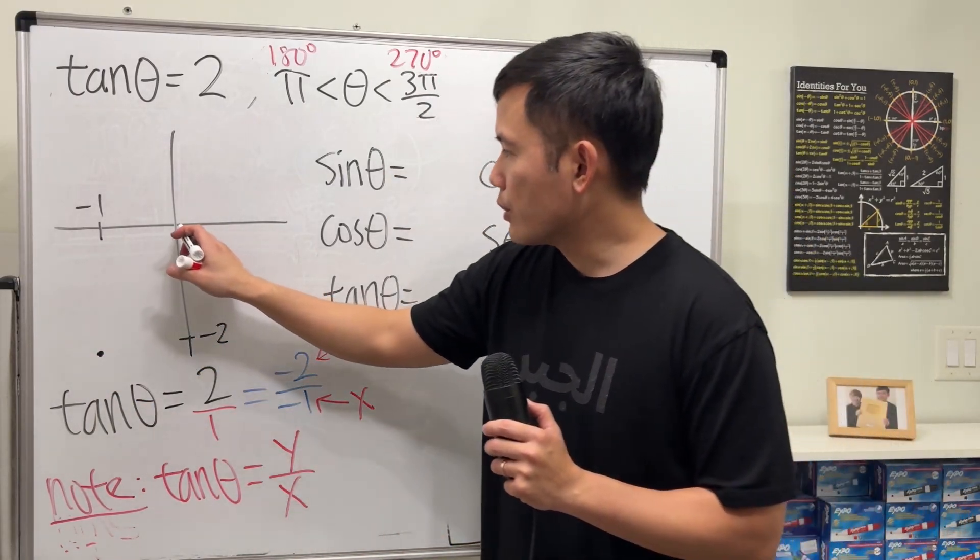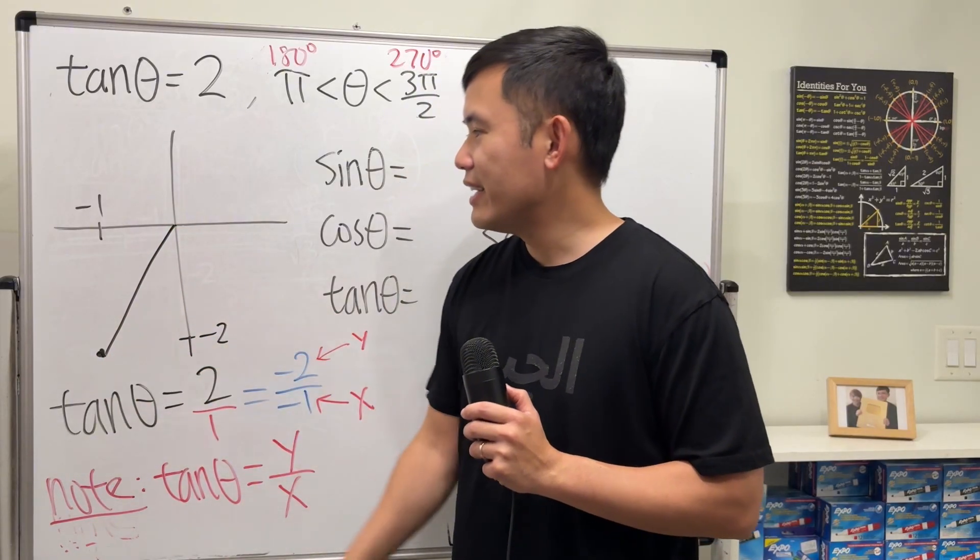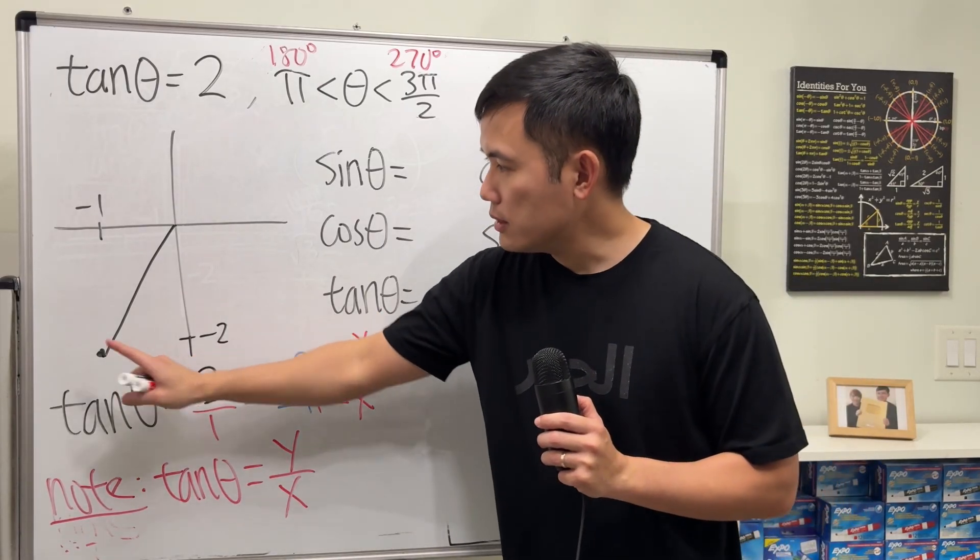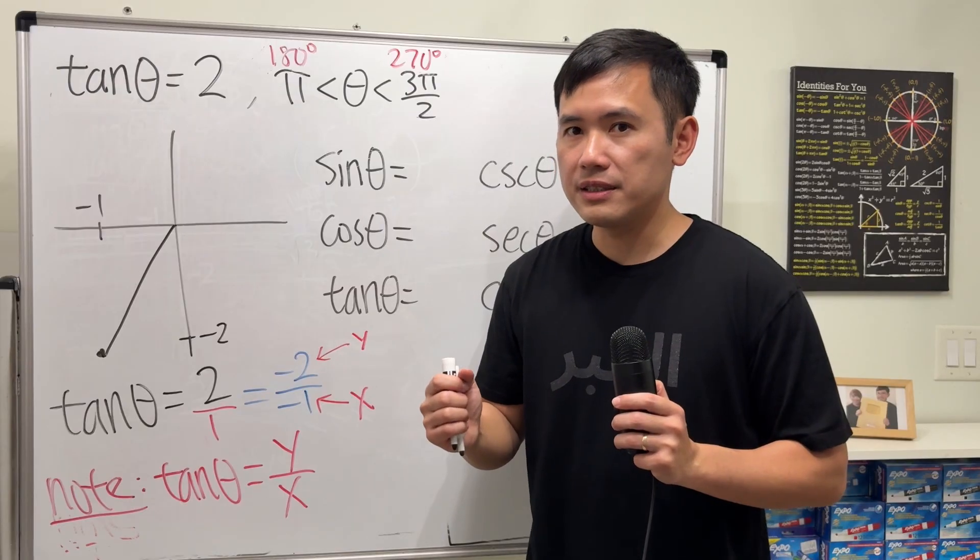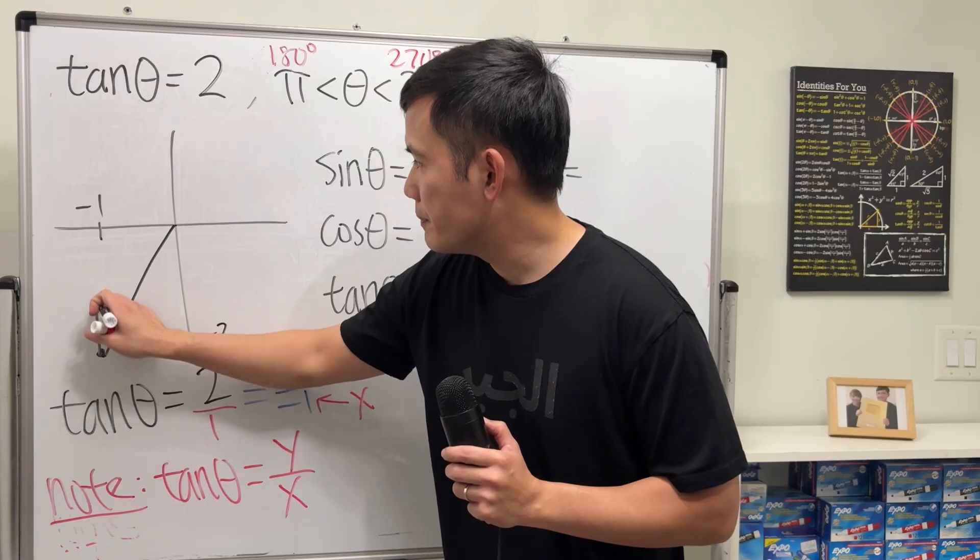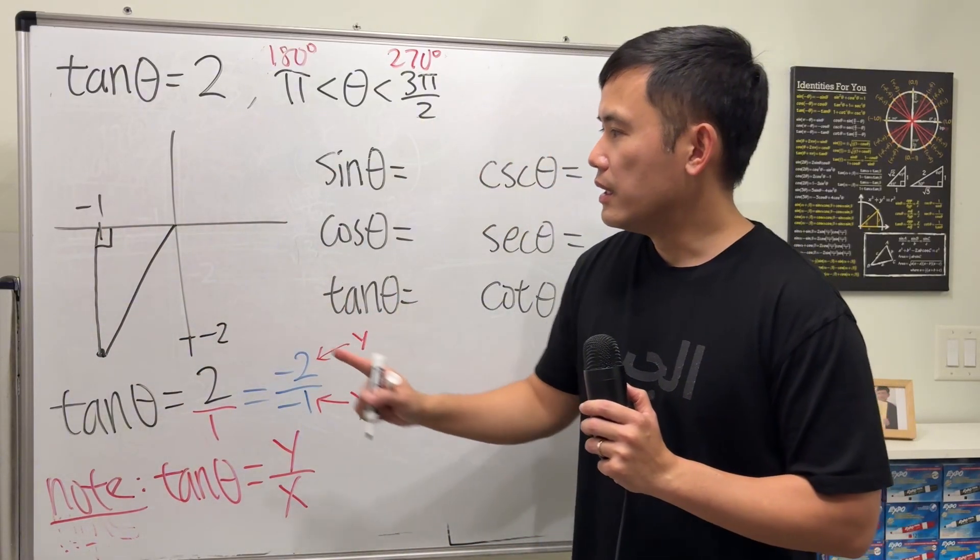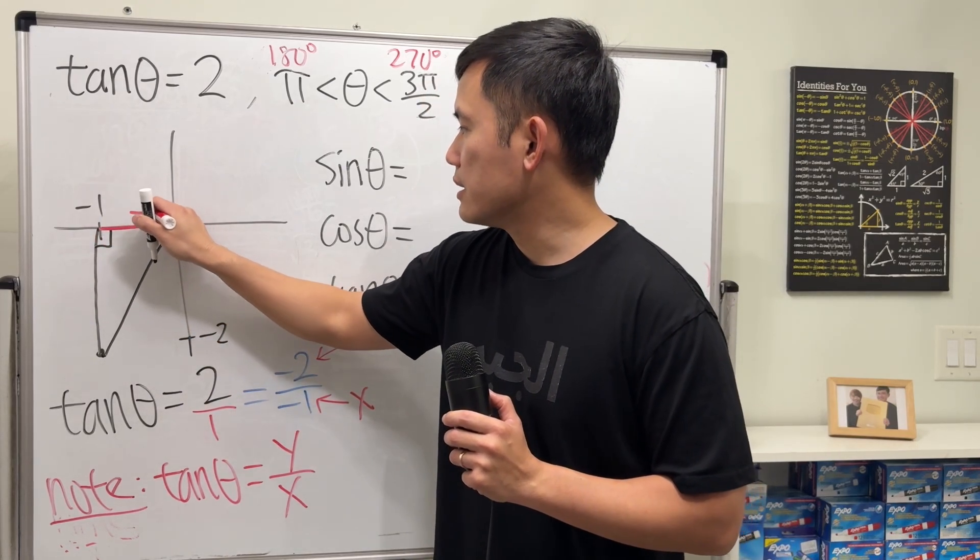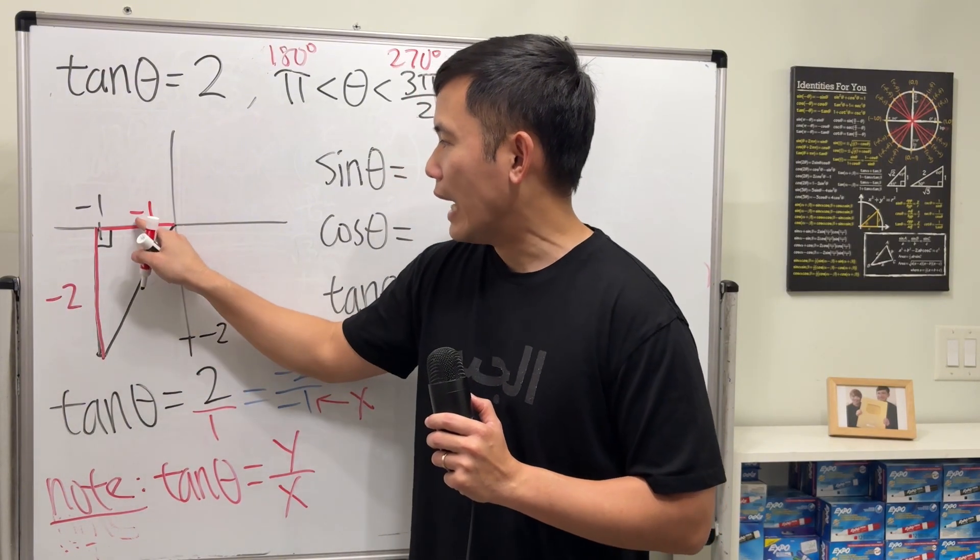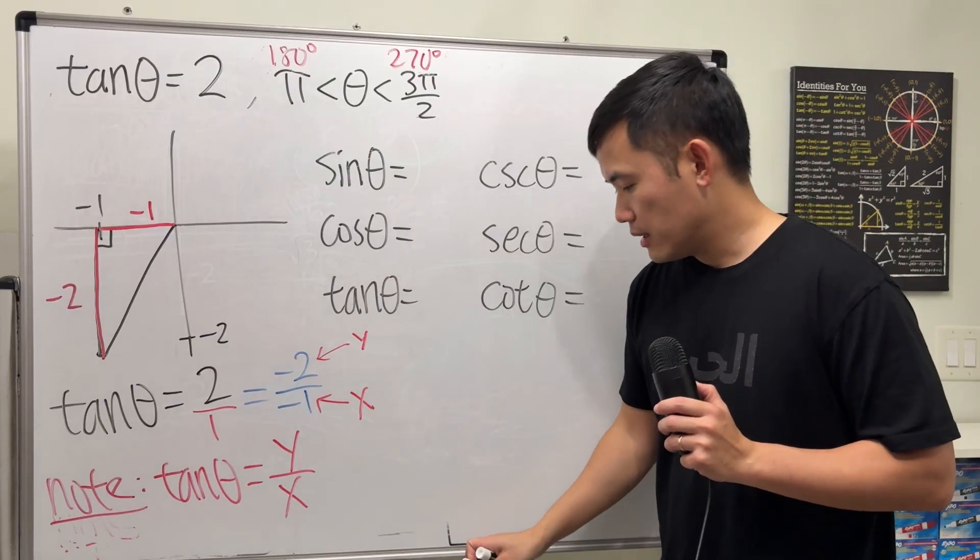And then we are just going to draw from the origin to the point. Remember, when you want to draw a reference triangle, you always go from the point either up or down to the x-axis, never connected to the y-axis. So in this case we go up. This is the reference triangle that we are going to use. Have a look. This side right here is negative 1, and this side right here is negative 2. You have to put the negatives.